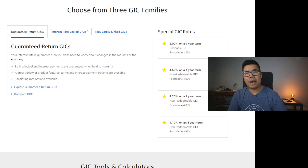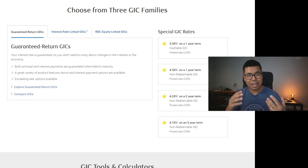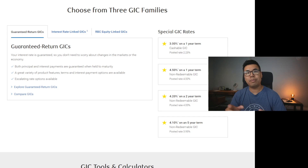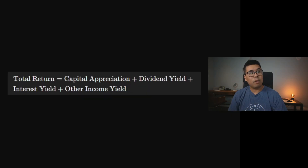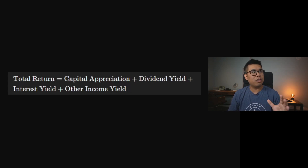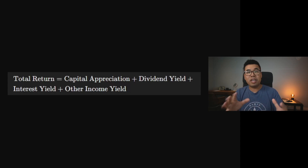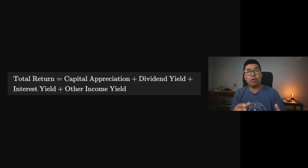Now, the concept of compounding is even simpler to understand with GICs and HISAs because it is guaranteed compounding. The principal never diminishes in value. If we go back to my total return formula, these GICs and HISAs don't really have to care about capital appreciation, dividend yield, or other income yield. It is mainly interest yield and the total return will always be positive.